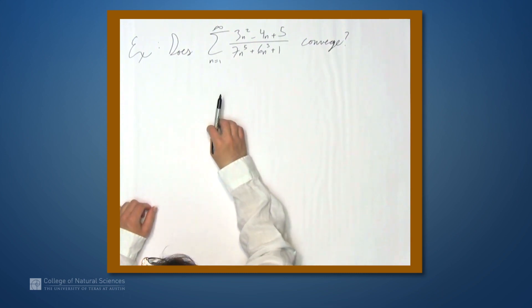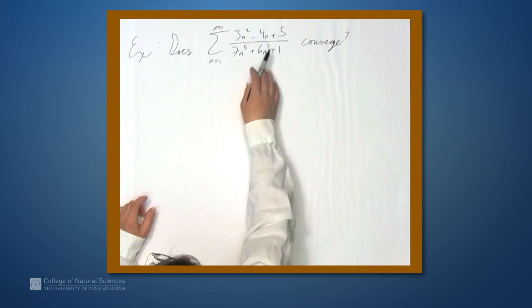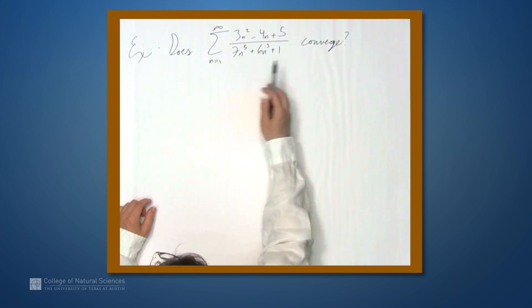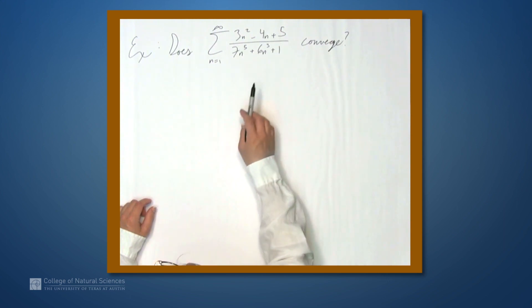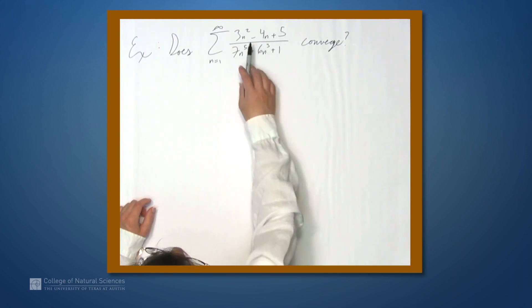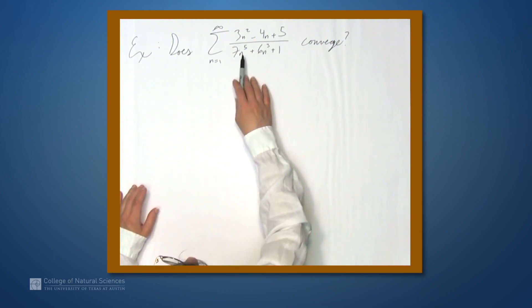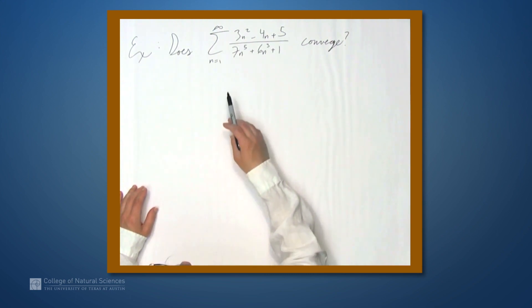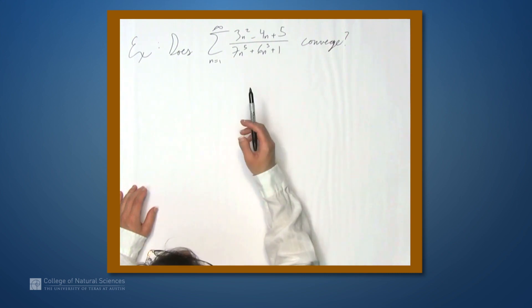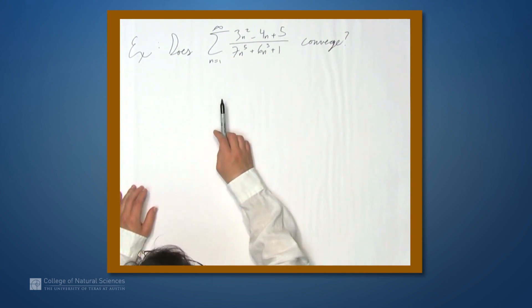We've already seen the regular comparison test, and you can do that if you have some sense of whether this series converges or diverges, and you compare it by making it smaller than a convergent series or larger than a divergent series. But it's not clear that we can easily determine this is less than this particular series or greater than this other series. We don't have to worry about that with the limit comparison test.